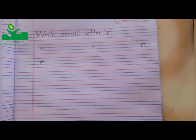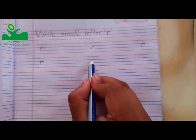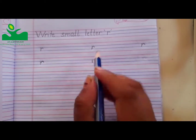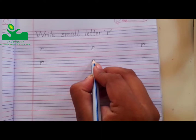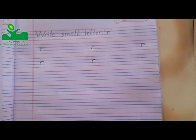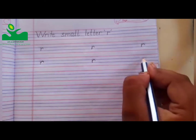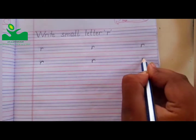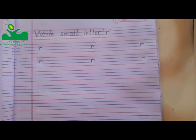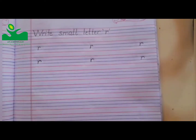R for Rose. One more time — standing line and curve. R for Rabbit. R for Rose and R for Rabbit. So today you can practice small letter R in your notebook. Bye-bye, take care.